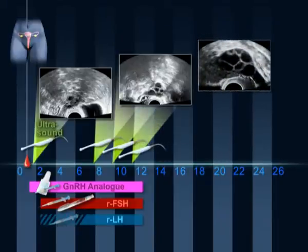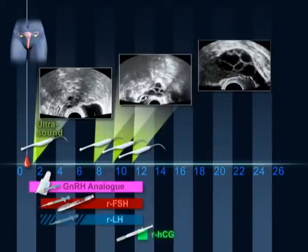When at least three follicles have grown to the size of at least 18mm, final follicular maturation is triggered with the hormone HCG. Oocyte recovery is undertaken 36 hours later.